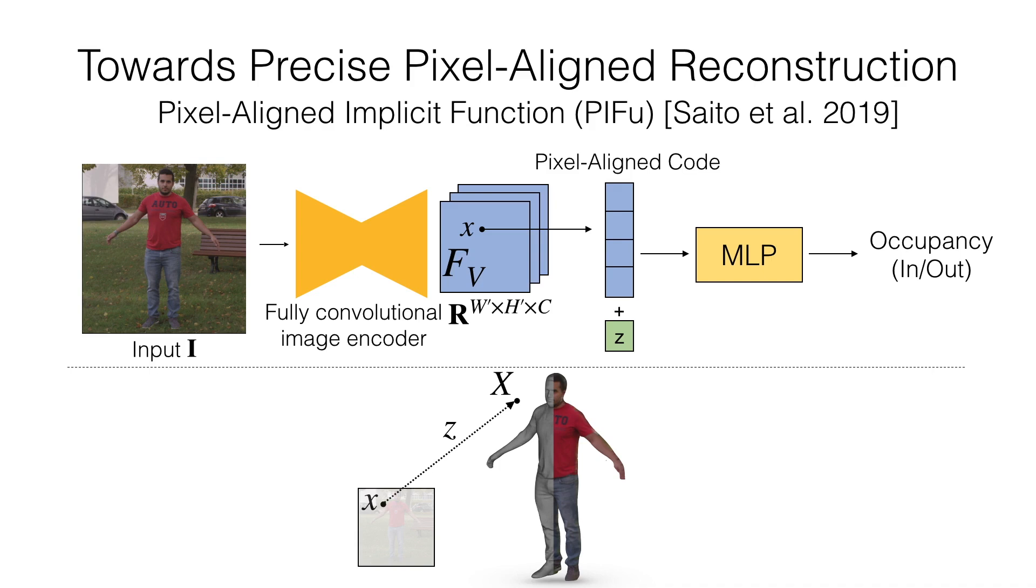we introduce pixel-aligned implicit function where we utilize three convolutional image features to associate queried 3D point and the projected pixel coordinate.